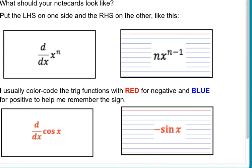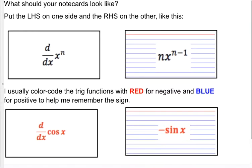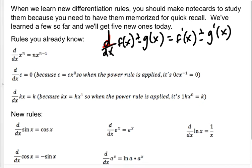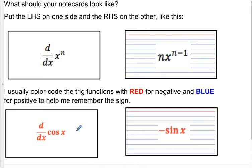Here's what I mean by making note cards. On one side of the note card should be the thing you're differentiating — so on one side, d/dx of x to the n. On the other side, you write what happens when you differentiate, which is nx to the n minus 1. For sine and cosine, which have a sign — not sine as in S-I-N-E, but sign as in S-I-G-N — notice the derivative of sine is a positive cosine and the derivative of cosine is a negative sine. I tend to color code my note cards. I make the ones that have a negative derivative in red.